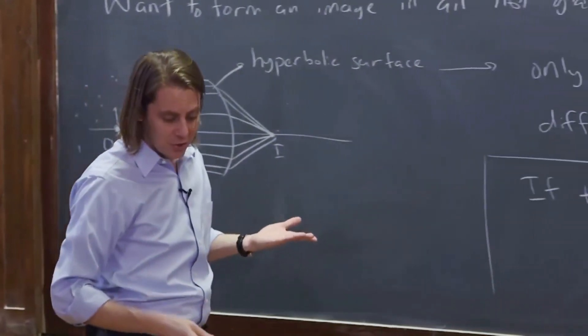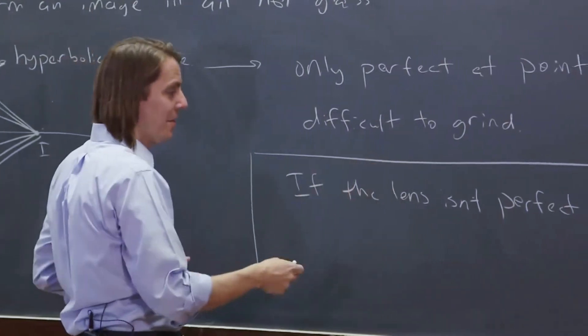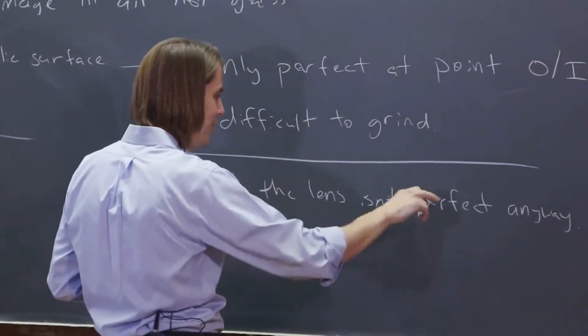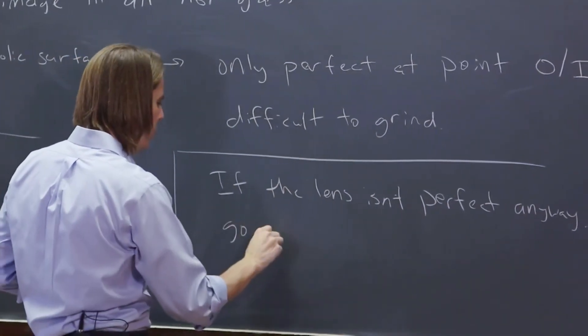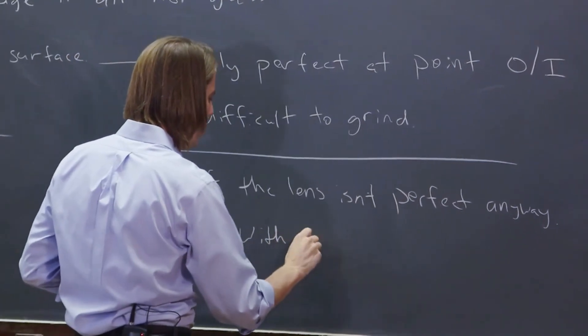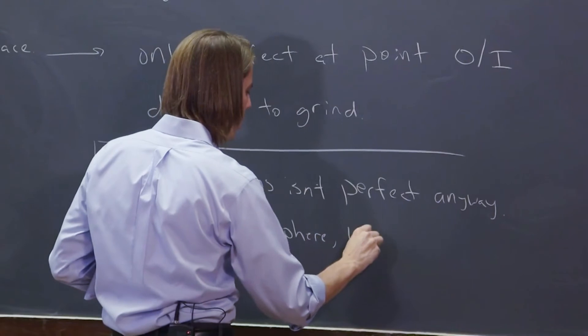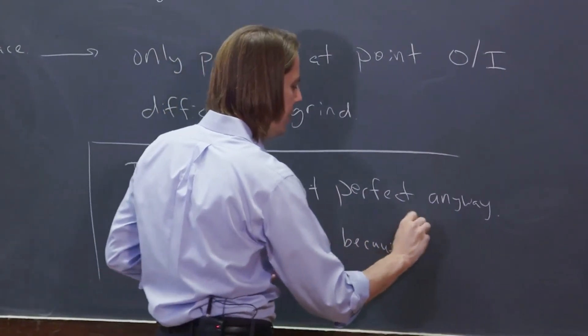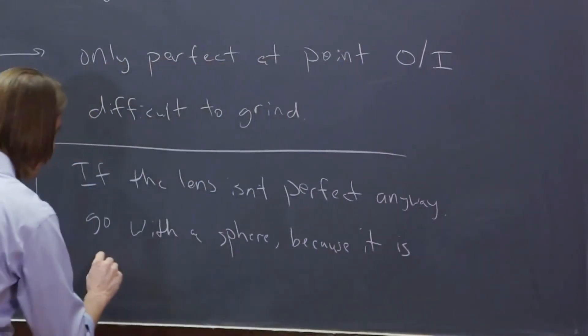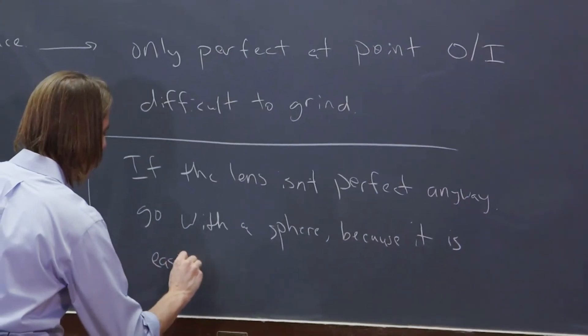So since all lenses are messed up anyway, since the lens isn't perfect anyway, go with a sphere, because it is easier to make.